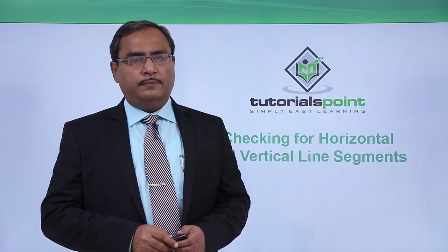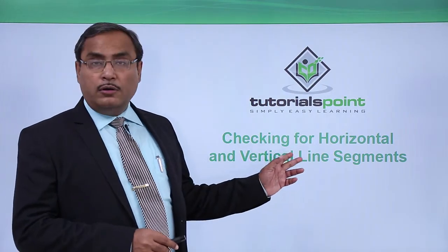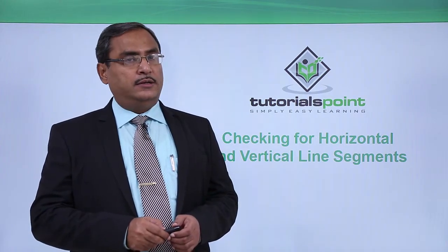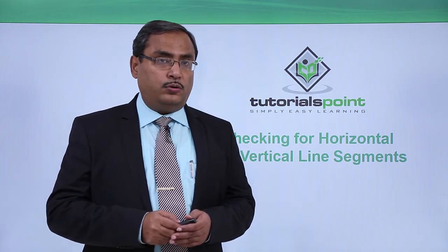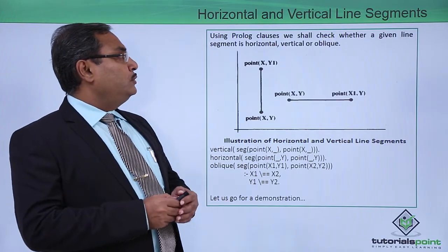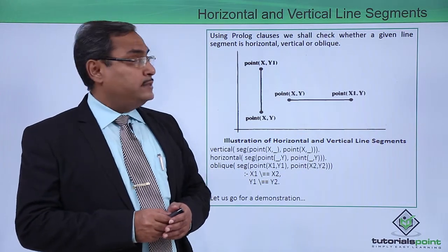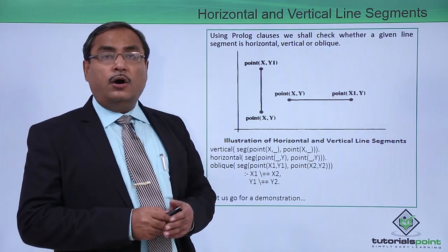Let us write one Prolog program for checking for horizontal and vertical line segments. How to write the respective code? We know that using the Prolog clauses, we shall check whether a given line segment is horizontal or vertical or oblique.